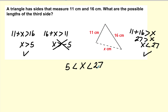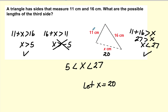X will be between these two numbers. For instance, let X equal 20: 11 and 16 add up to more than 20; 20 and 16 add up to more than 11; and 11 and 20 add up to more than 16. So any number in that range would work for X — we have lots of possibilities.